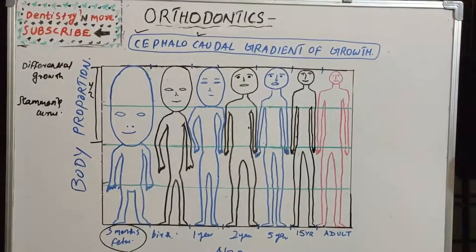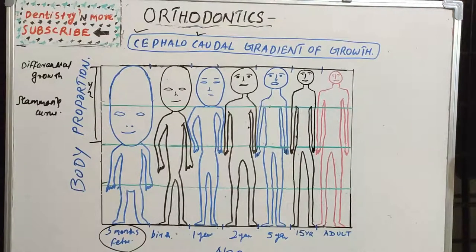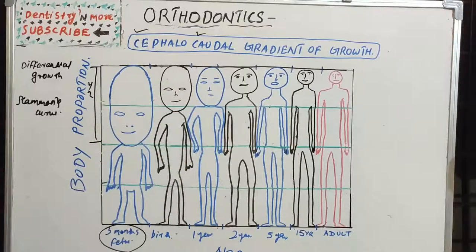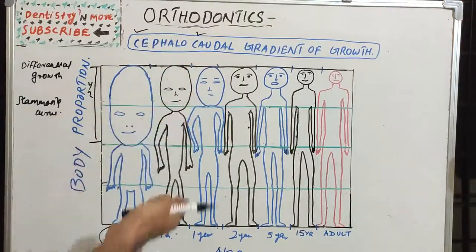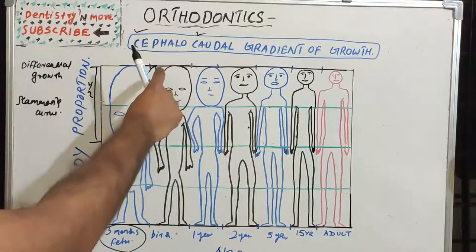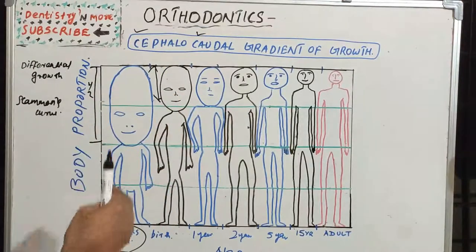Then the head grows proportionally more slowly, whereas the limbs and trunk grow much faster, so the proportion of the entire body occupied by the head is reduced. At birth, the head proportion is one quarter of the body length, because the growth of the head slows while the limbs and trunk grow faster.